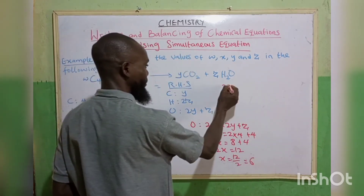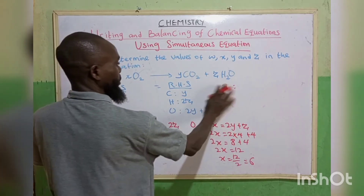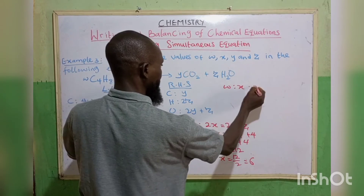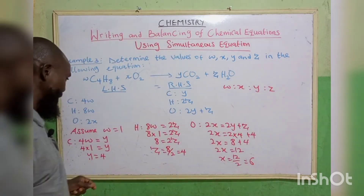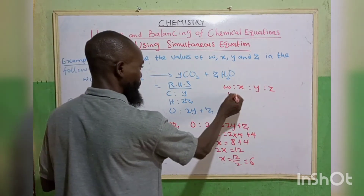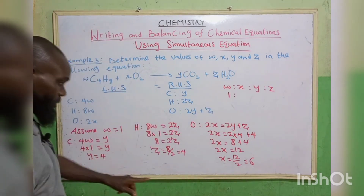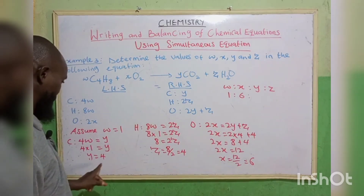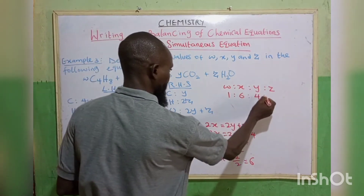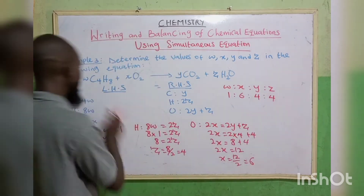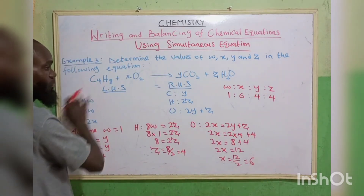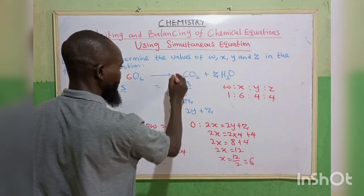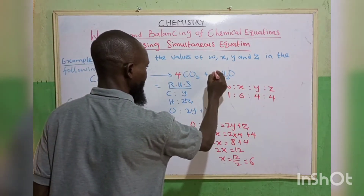So the ratio w : x : y : z is 1 : 6 : 4 : 4. All values are already whole numbers, so w is 1, x is 6, y is 4, z is 4.